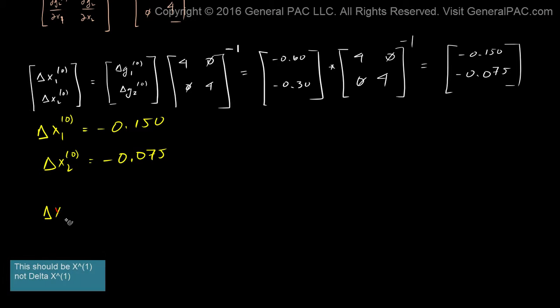We have delta x1, but now we have the next set of iterations. And that's why we advanced the superscript to 1. That is equal to x1 of the zeroth plus delta x1 of the zeroth. We know what x1 of the zeroth was.